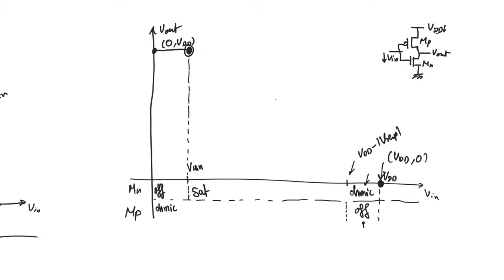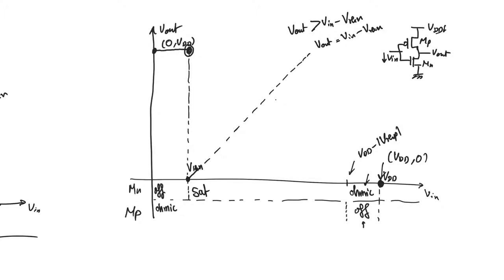When does the NMOS switch from saturation to ohmic? The NMOS is saturated when VDS is greater than VGS minus V-threshold-N. Since VDS is V-output and VGS is V-input, this gives: V-output equals V-input minus V-threshold-N as the boundary equation. This is a straight line with unity slope and an x-intercept of V-threshold-N. Any point above this line in the plane means the NMOS is saturated; any point below means the NMOS is ohmic.